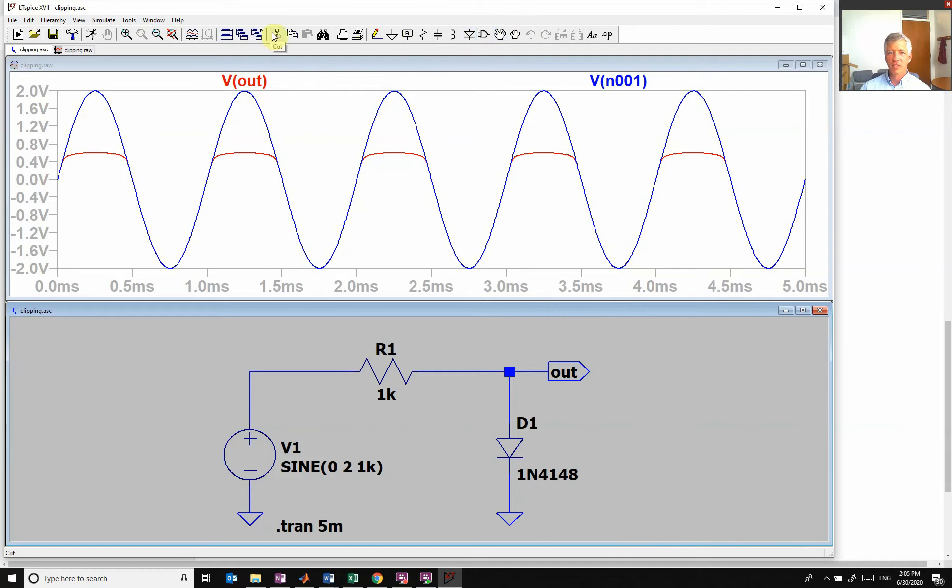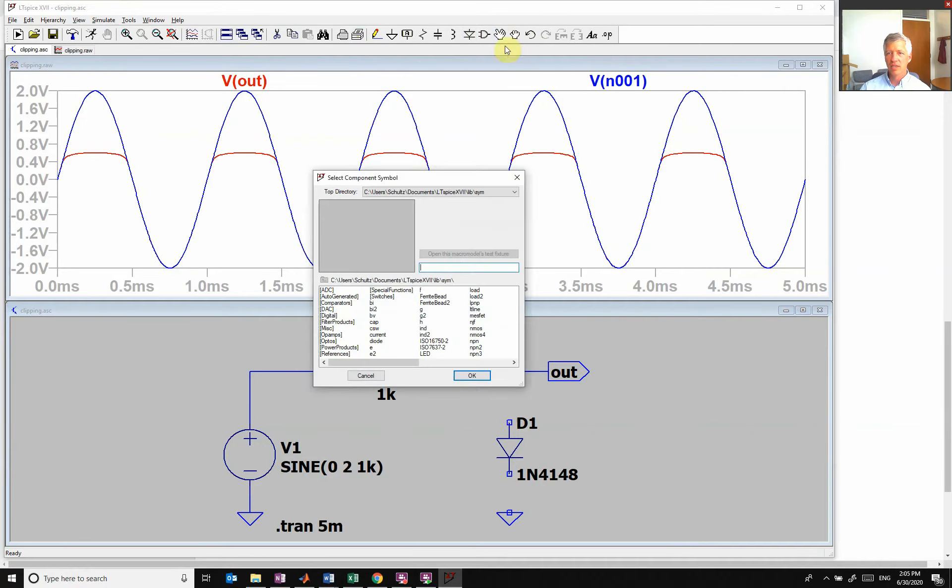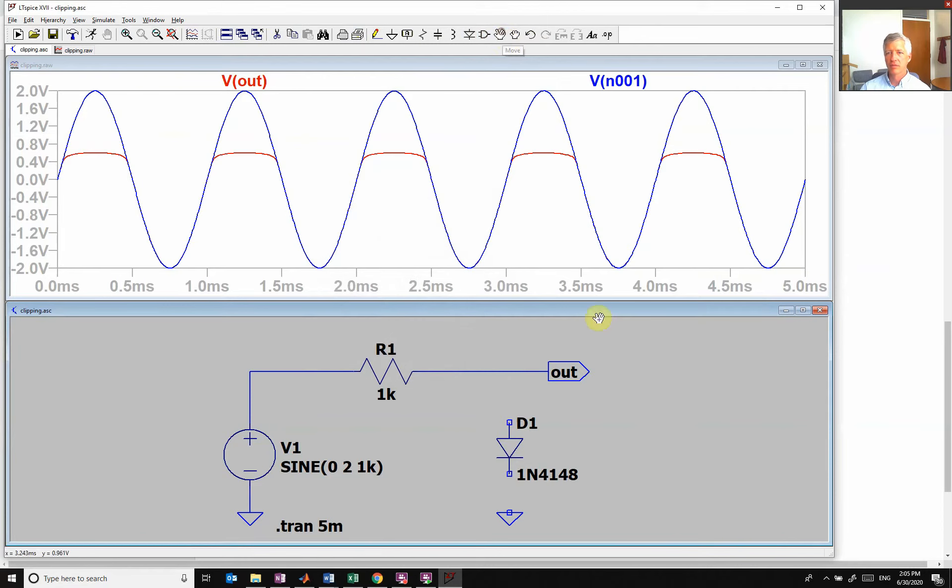Some of the other things that we can do is we can put in two diodes. And then it's going to clip. So now I have two of these at like the 0.6, 0.7 volts, and they're going to add together. Now it's only clipping off the top, not the negative.